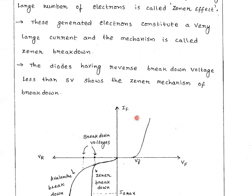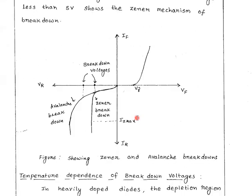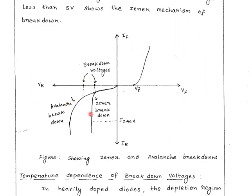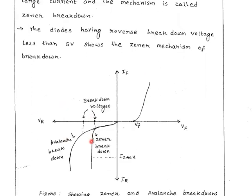Avalanche breakdown occurs at greater than 5 volts, while Zener breakdown occurs at less than 5 volts.